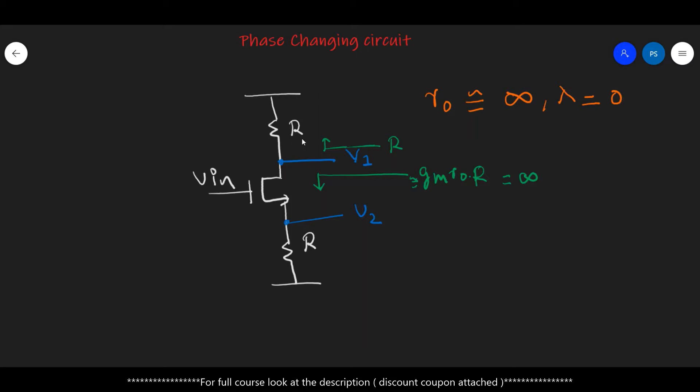If you look at it, there is one drain resistance, let's say R, and another source resistance which is also equal to the same value as R. For simplicity, we will assume that the ro, the drain to source resistance of this MOSFET, is infinite or the channel length factor lambda is zero.